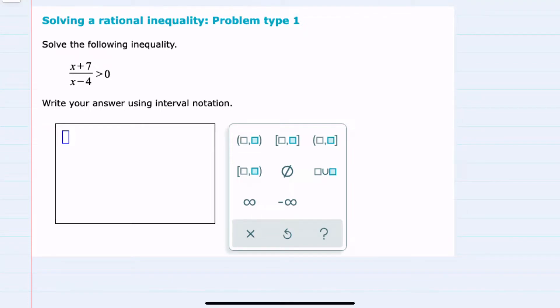In this video, I'll be helping you with the Alex problem type called solving a rational inequality, problem type 1. We're given our inequality here, where on the left-hand side we have an expression. In this case, it's a quotient that is greater than 0.